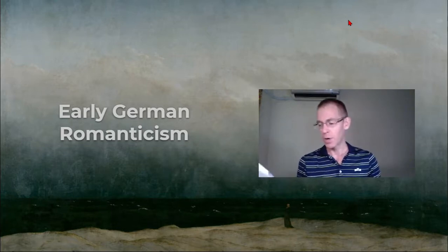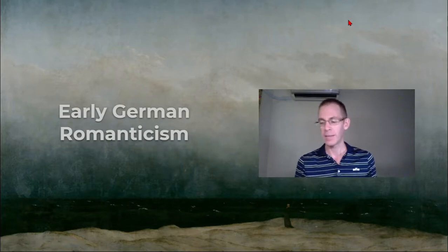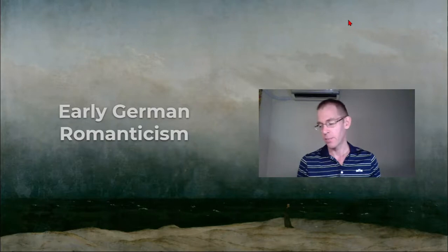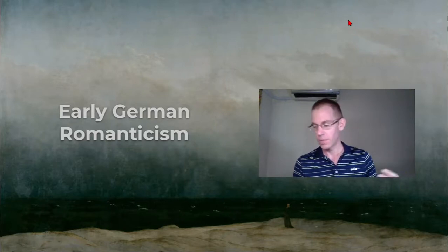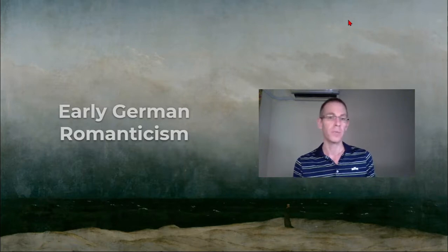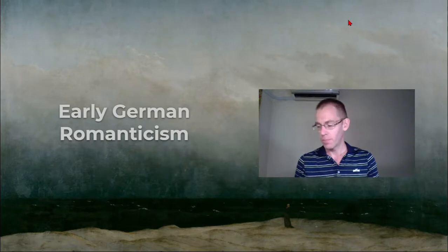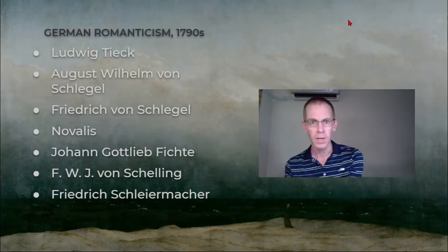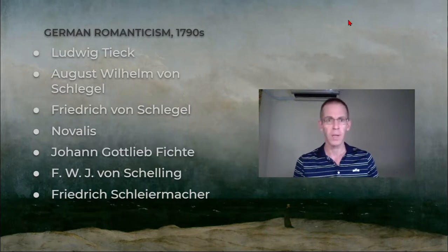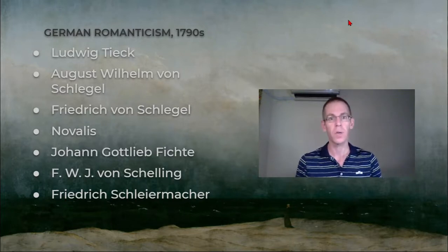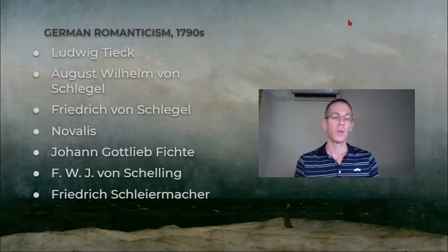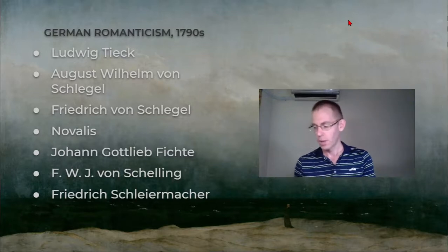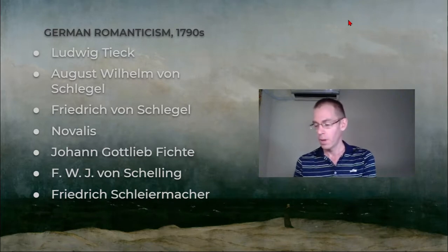So let's get a little bit of the context in order. The German romanticism of the 1790s is called by scholars early romanticism or Jena romanticism. This is because the writers who were part of it were based in the German city of Jena in the 1790s. The writers included people like Ludwig Tieck, the Schlegels—August Wilhelm and Friedrich von Schlegel—Novalis, Fichte, Schelling, Schleiermacher...